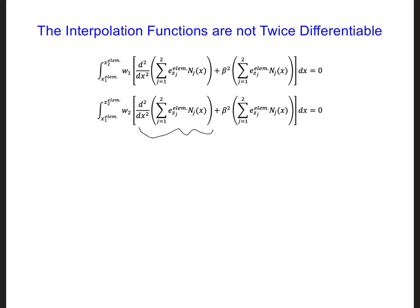Look at the first term in the brackets. We need to take the second spatial derivative of the expansion of ez, which means we need N, capital N here, the interpolation functions, to be twice differentiable.